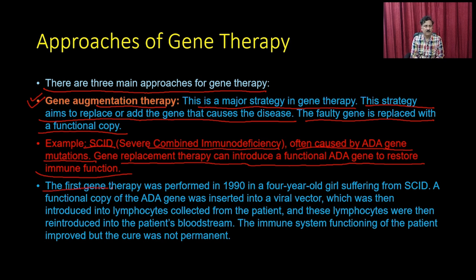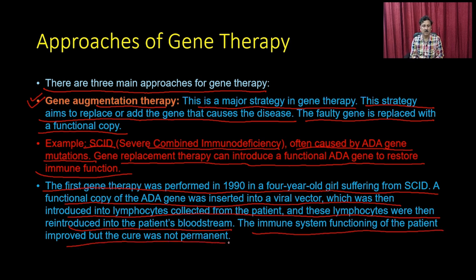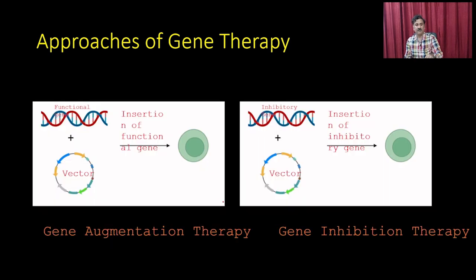The first gene therapy was performed in 1990 in a four-year-old girl suffering from SCID. A functional copy of the ADA gene was inserted into a viral vector, which was then introduced into lymphocytes collected from the patient. These lymphocytes were reintroduced into the patient's bloodstream, and immune system functioning improved, but the cure was not permanent.